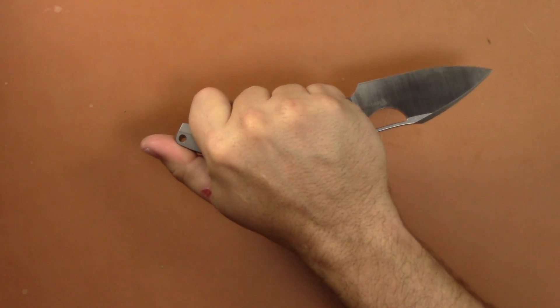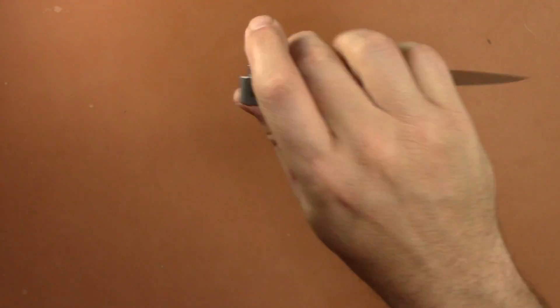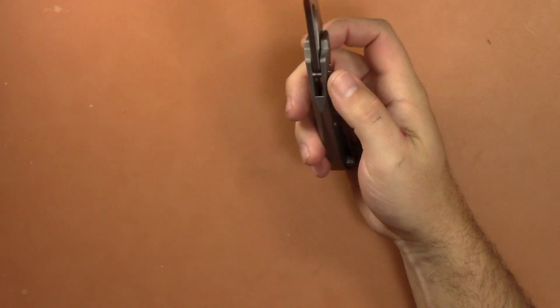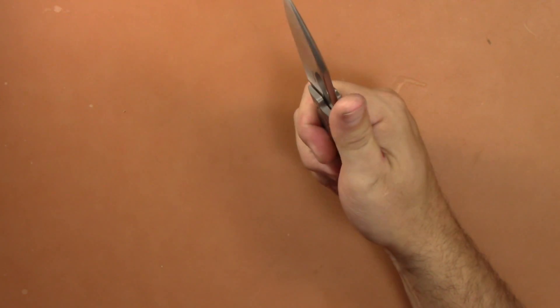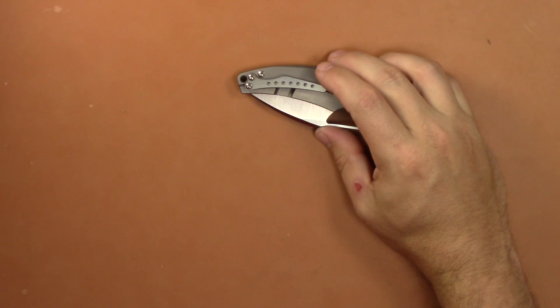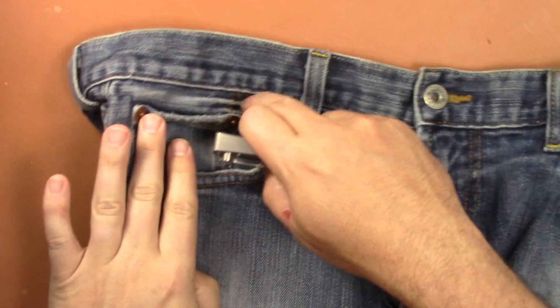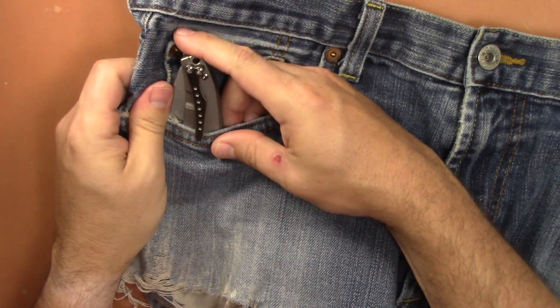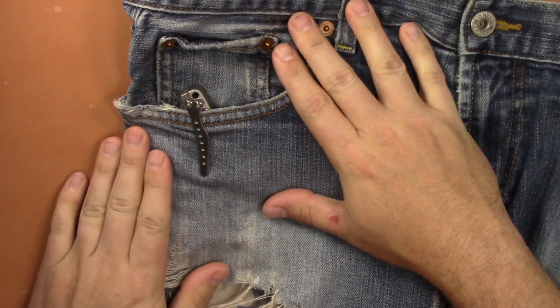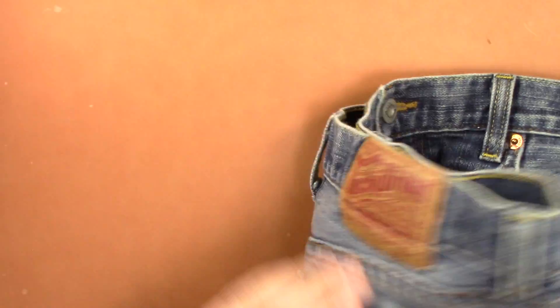And then the reverse grip, super comfortable as well. You can also choke up a little bit on that or you can choke back. So it has basically two different ways you can hold the knife. The pocket clip is nice, it's titanium milled, very well done. Let's go ahead and show you how it carries in the pocket. It's pretty deep, it's not 100% but pretty deep carry. Works well, easy to get on and off, nice retention. So the pocket clip is definitely a winner.